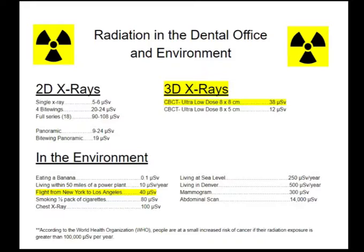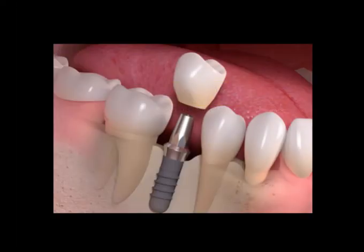While CBCT technology can be used for other applications in the dental office, most commonly it's used prior to placing a dental implant. The trouble with traditional 2D x-rays is that you can only see height and width, but you can't see depth. And when evaluating important nerves and blood vessels that run throughout the oral cavity with 2D x-rays, you're basically making an educated guess as to where these structures are.